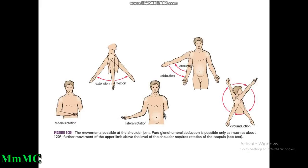Adduction is caused by anterior and posterior fibers of deltoid, pectoralis major, teres major, latissimus dorsi, coracobrachialis, and long head of triceps. Medial rotation is caused by anterior fibers of deltoid, pectoralis major, and subscapularis. Lateral rotation is caused by infraspinatus, teres minor, and posterior fibers of deltoid. Movements include extension, flexion, abduction away from the midline, adduction towards the midline, medial rotation, lateral rotation, and circumduction.